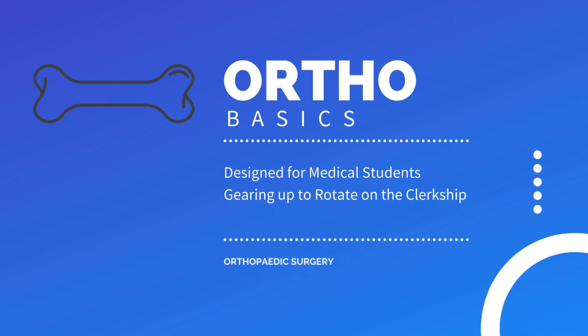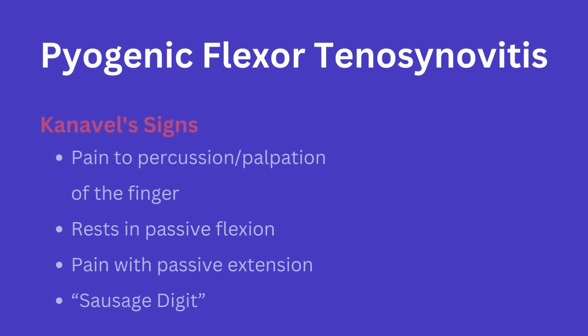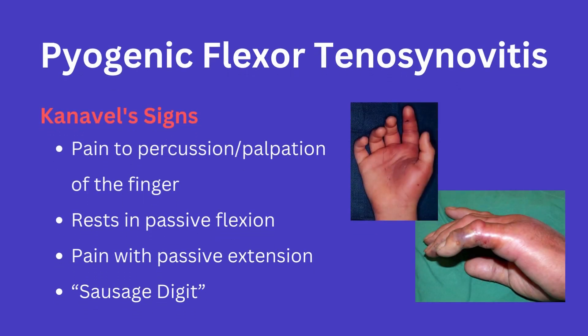Today we will briefly go over pyogenic flexor tenosynovitis. This occurs secondary to an infection of the flexor tendon sheaths within the hand. You might also hear this referred to as septic or suppurative flexor tenosynovitis, and it is definitely something you could see in the emergency department on rotation.